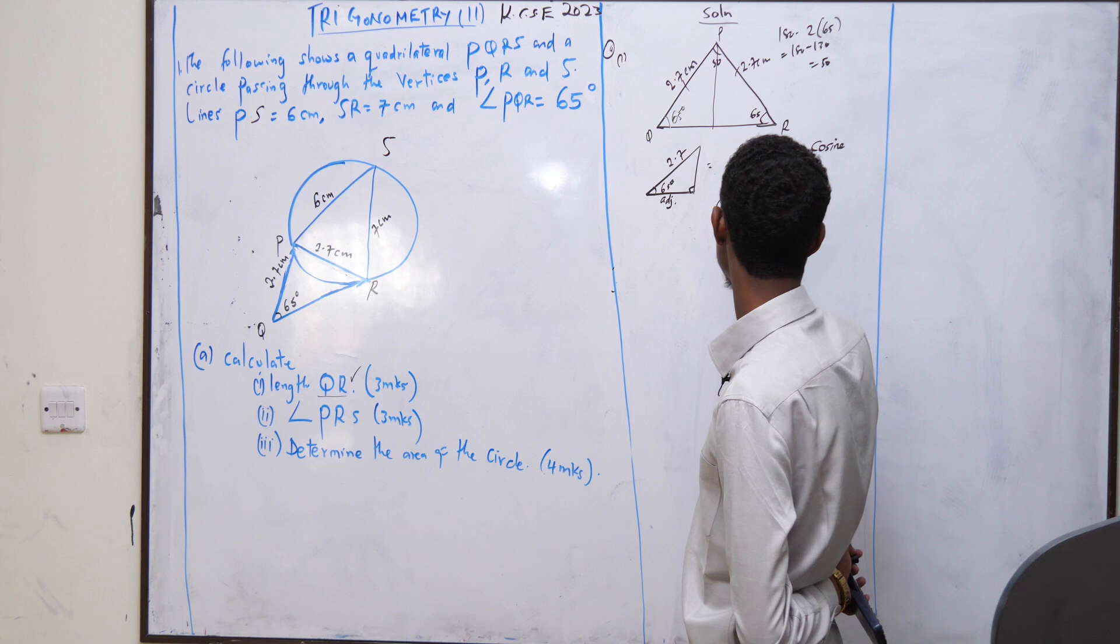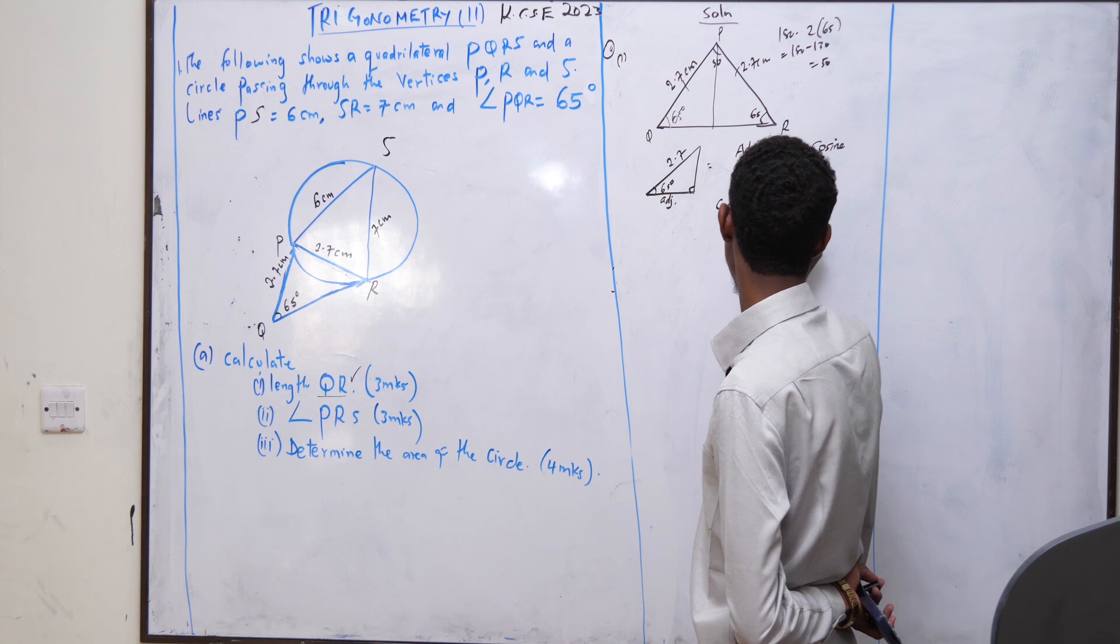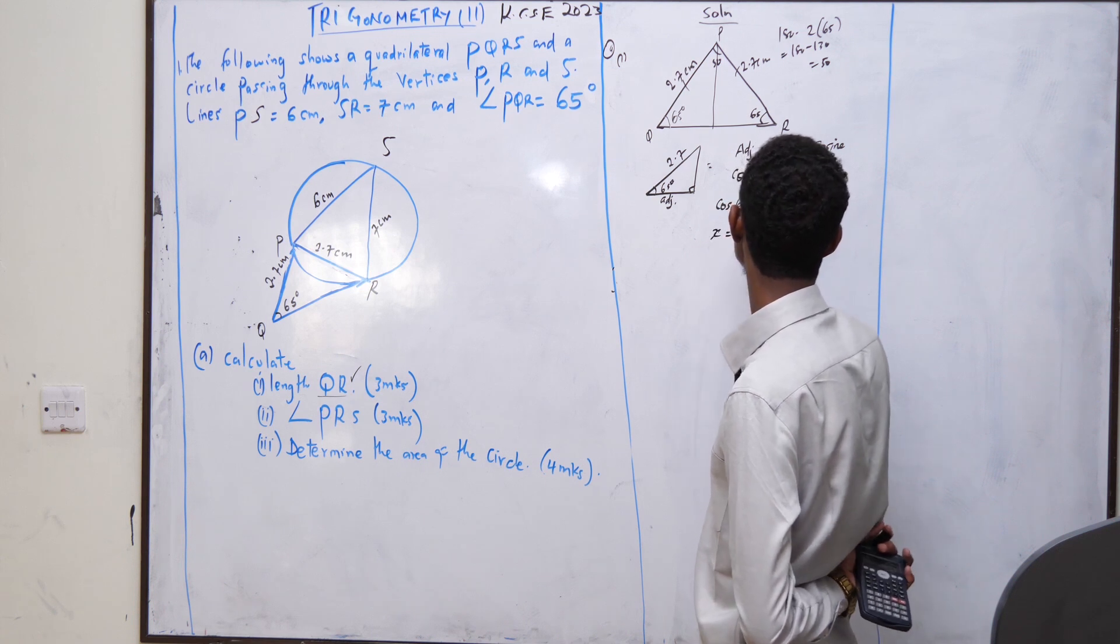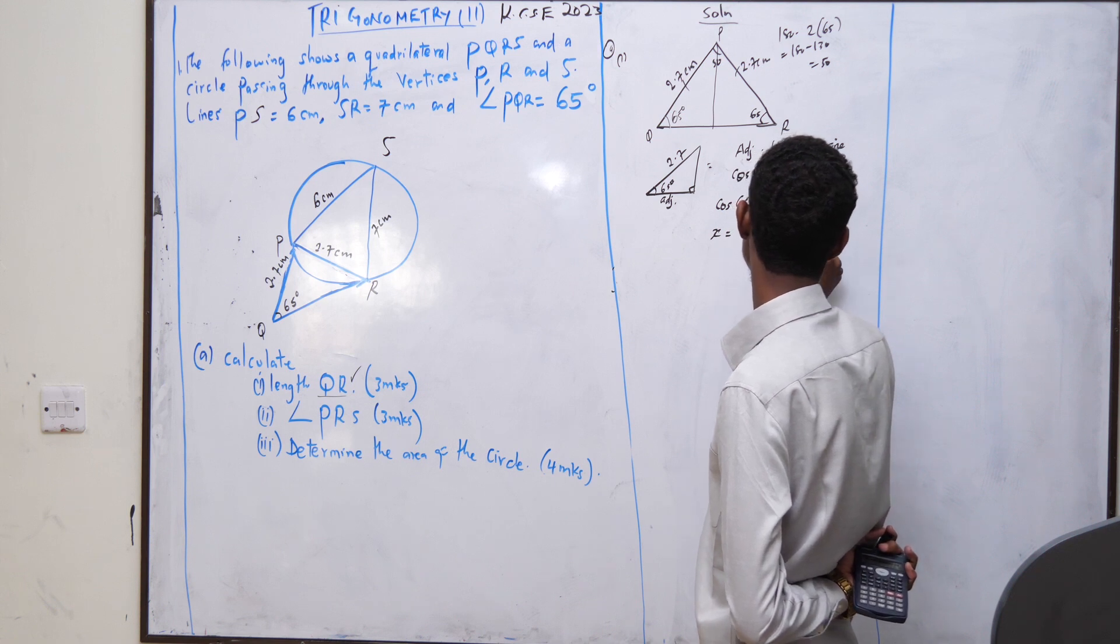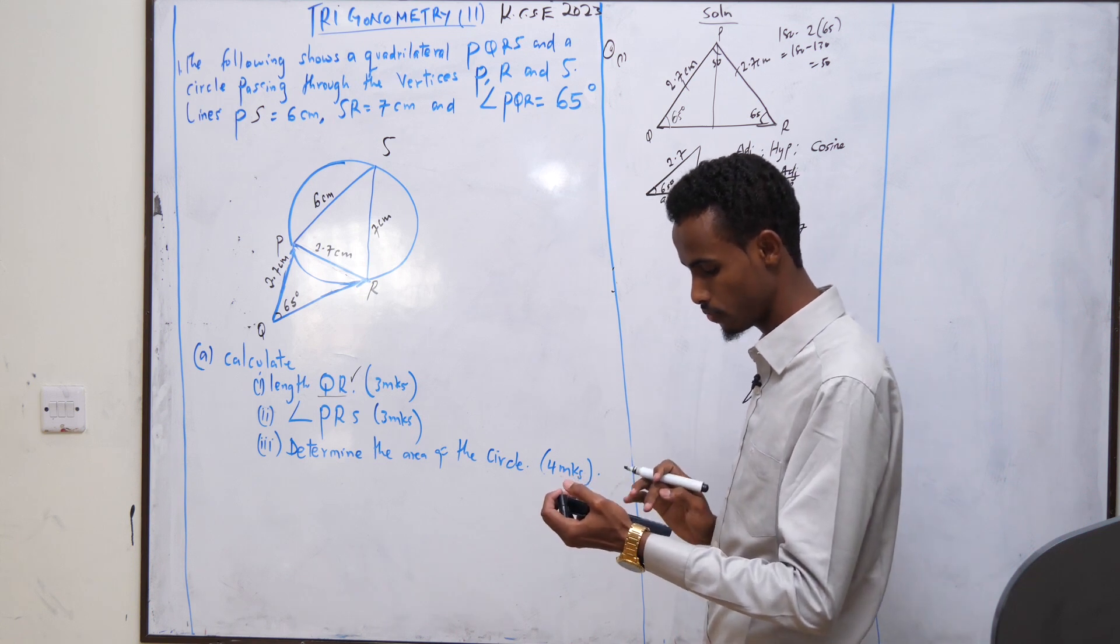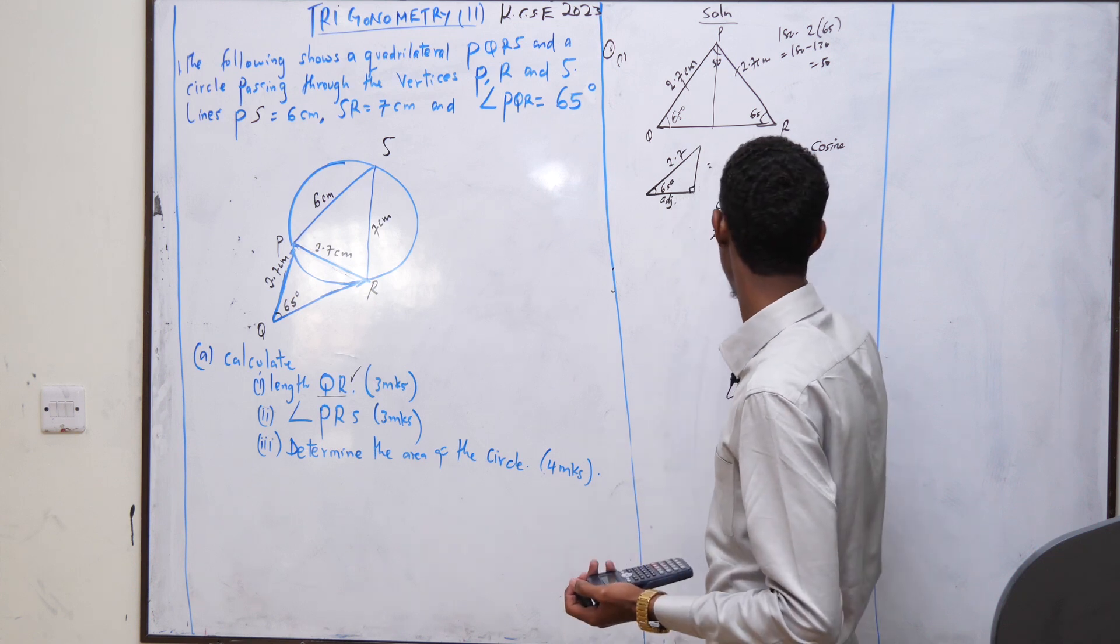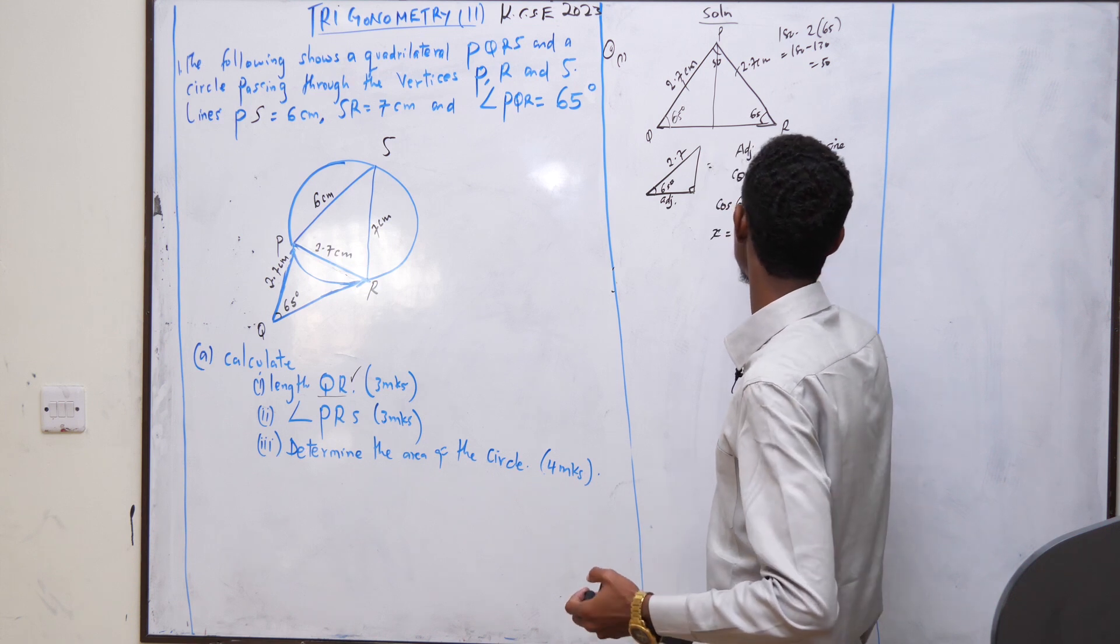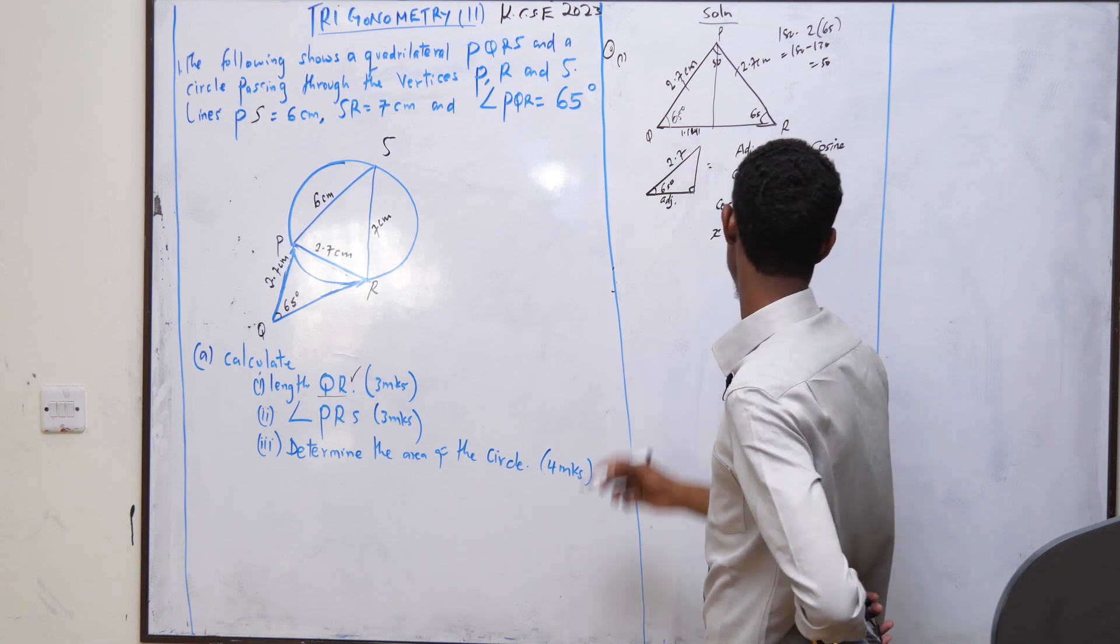It becomes cos 65 degrees equals x, which is the adjacent, over 2.7. x will therefore be cos 65 times 2.7, which will become cos 65 times 2.7, that is 1.141 centimeters.